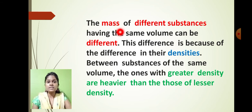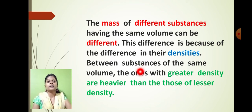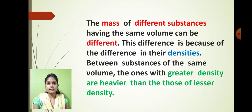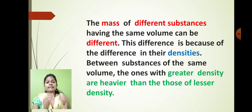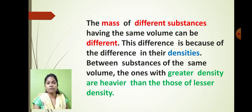Why? Because the mass of different substances having the same volume can be different. Although the volume is the same, why are the masses different? Because of the difference in density. Between substances of the same volume, the one with the greater density is heavier than those with lesser density. The iron block has more density, that's why it is very heavy, and the wooden block has less density compared to the iron block, so the wooden block is less heavy. This is the density property of a substance — although the volume and shape are the same, substances differ from each other depending on their mass, and that is because of density.